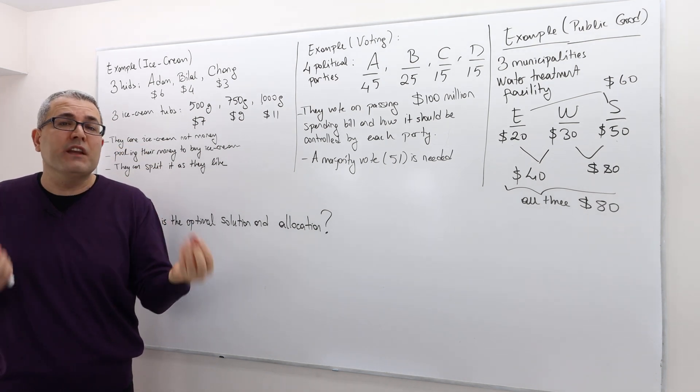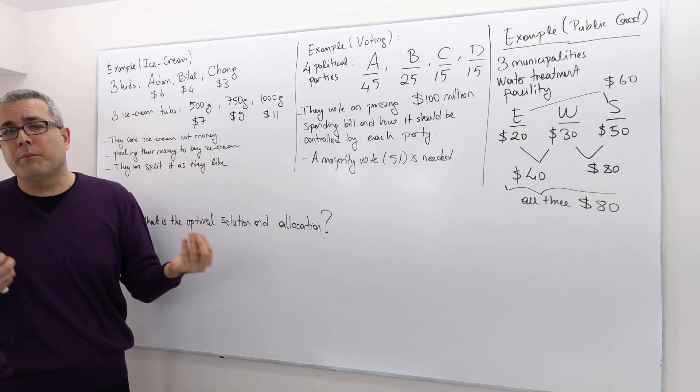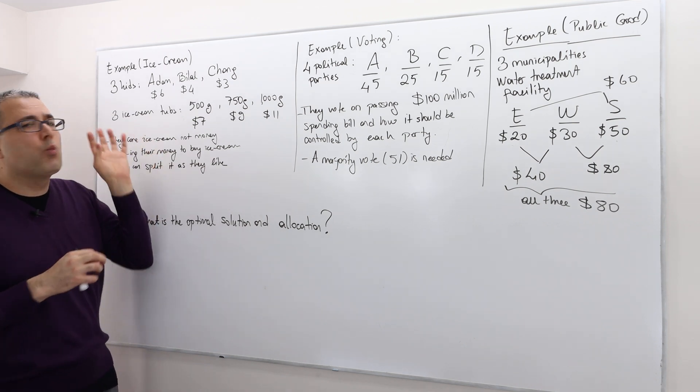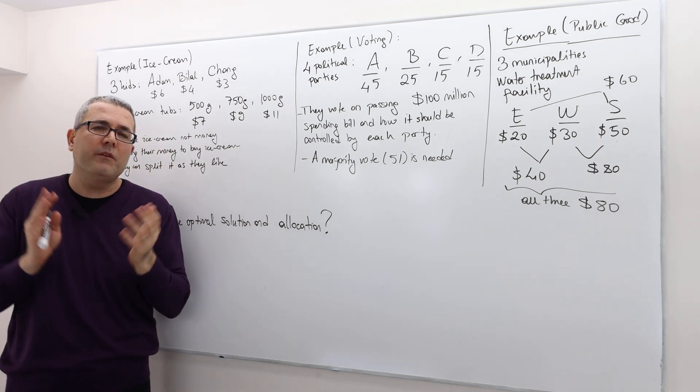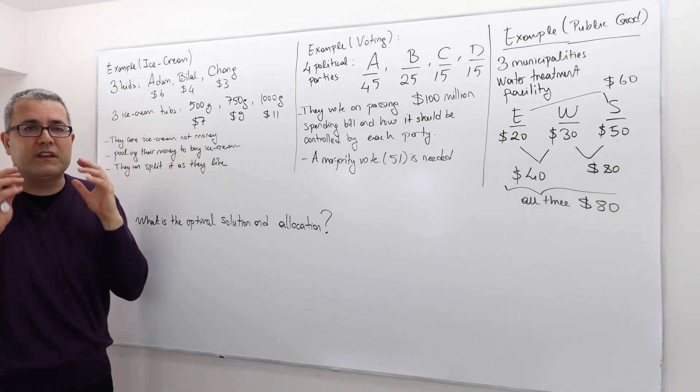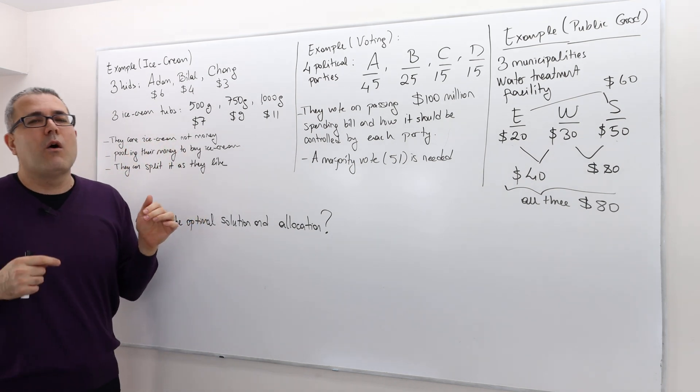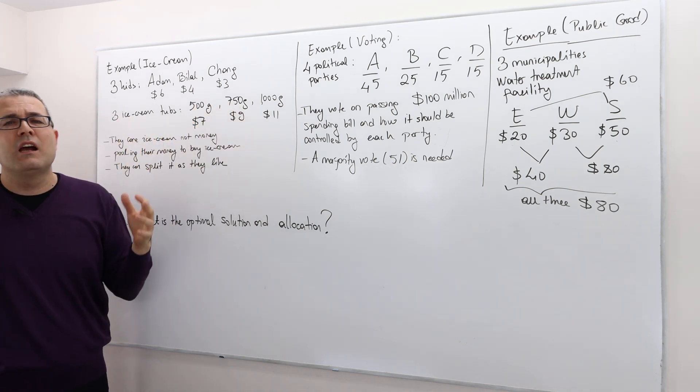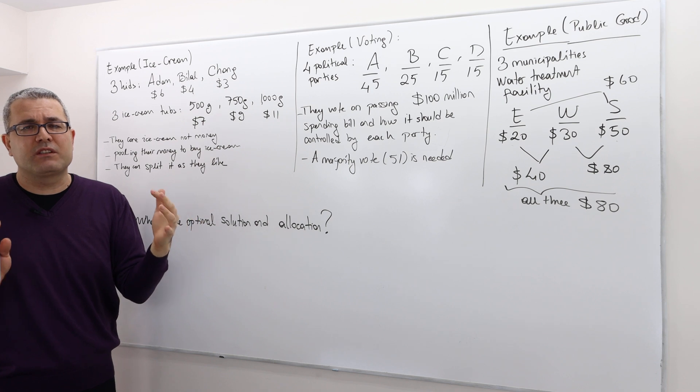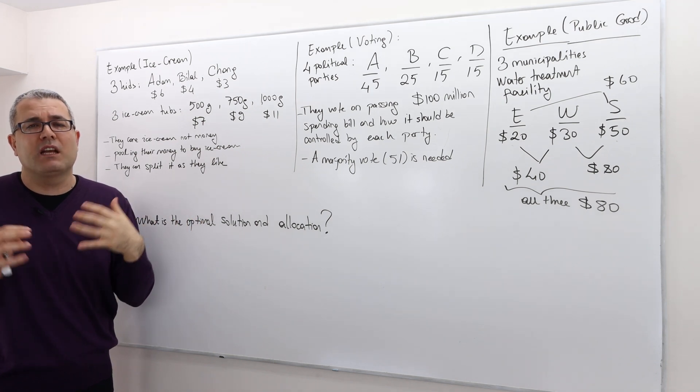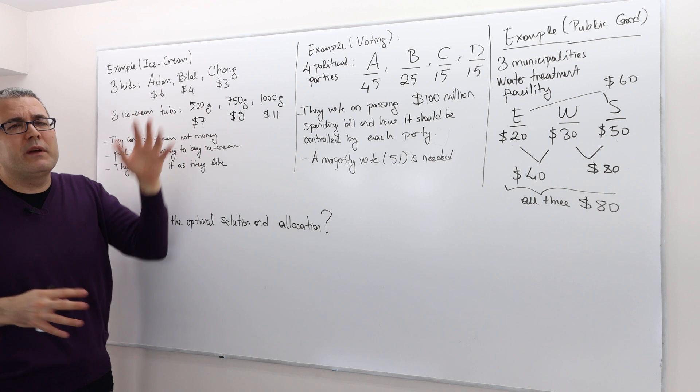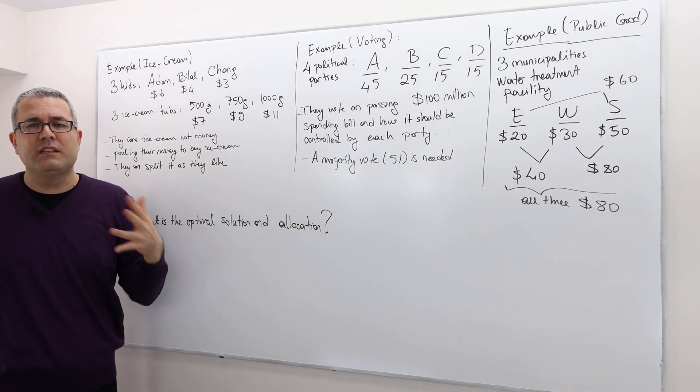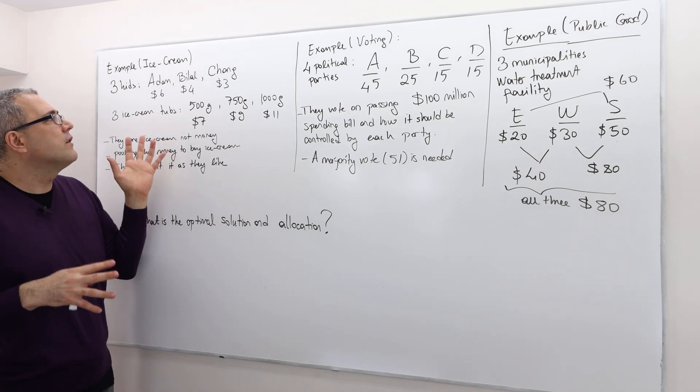So whatever it is, whatever they decide, it's not just one person's decision. Well, obviously you may think maybe Adam is a dictator, so he's going to basically grab all the other two guys' money and then he's going to enjoy, say, one kilo or one thousand grams of ice cream by himself alone. Well, we assume that nobody has some sort of dictatorship or power to seize the entire control.